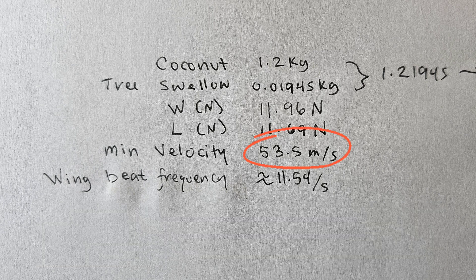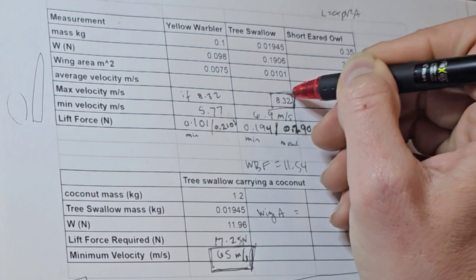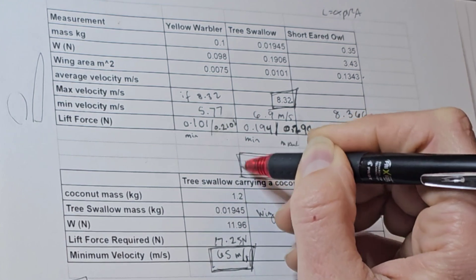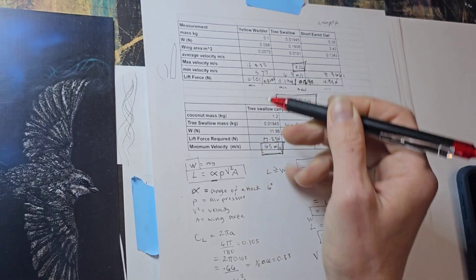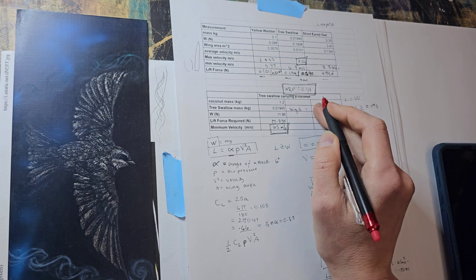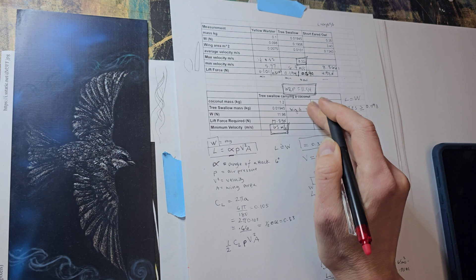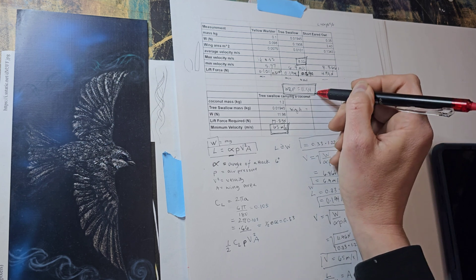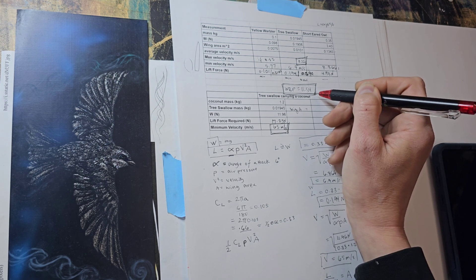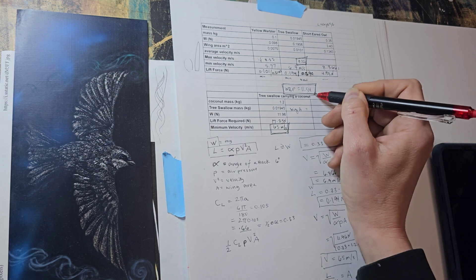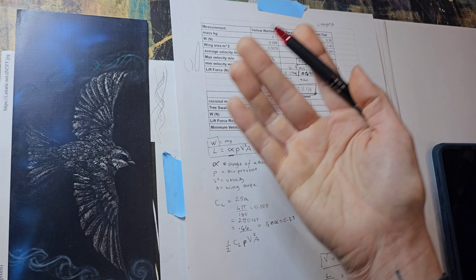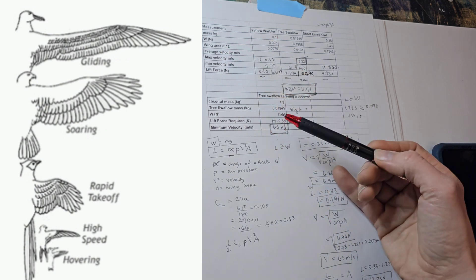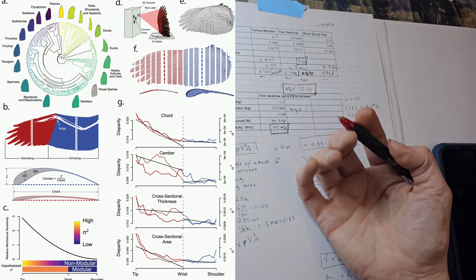What really tells you it's totally impossible is that the tree swallow's max velocity is only 8.32 meters per second. They also have a wing beat frequency of 11.54, and they would need to nearly double their wing beat frequency to have any hope of reaching that speed — but they're not physiologically capable of doing that because of the lactic acid buildup. So they're physically incapable of doing this. The only way a bird could accomplish this is if it really needed to — evolving over a long time the ability to carry more and more mass, which would mean changing wing shape and wing area.